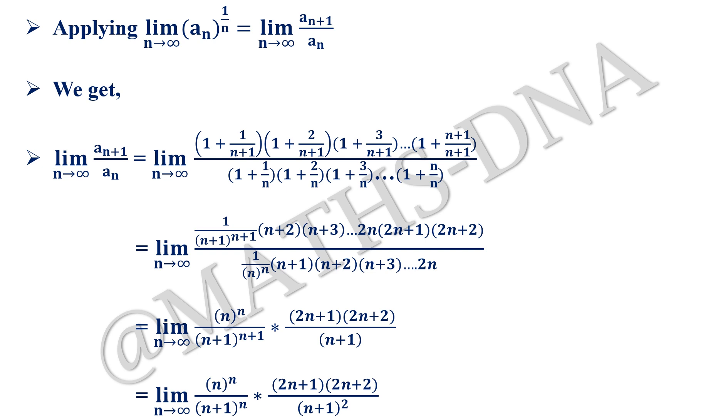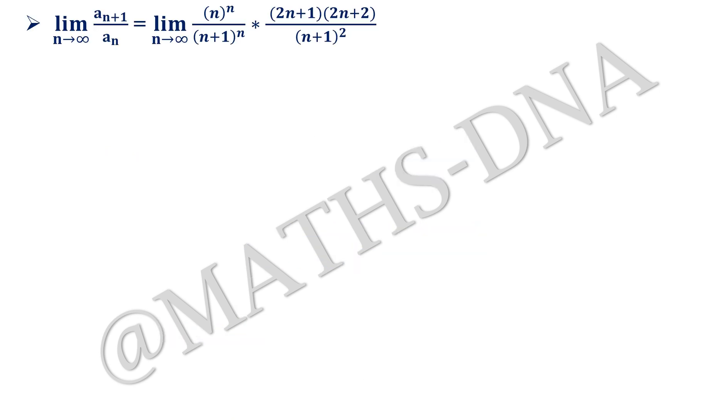Further simplifying this gives us limit n tends to infinity n raised to n upon n plus 1 raised to n, into 2n plus 1, 2n plus 2, whole divided by n plus 1 square. Now why did we do this? To get our required e. You will see here we have limit n tends to infinity an plus 1 upon an equals limit n tends to infinity n raised to n upon n plus 1 raised to n, into 2n plus 1, 2n plus 2, divided by n plus 1 square.